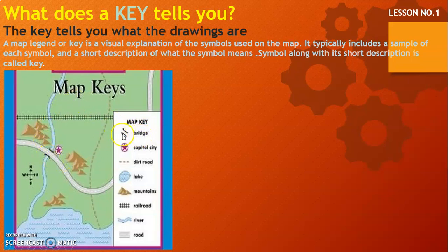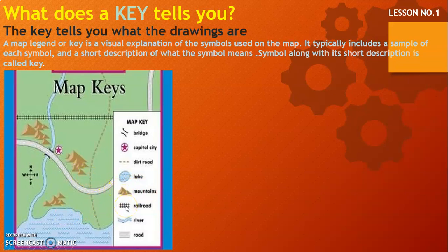In this map, this symbol represents a bridge — there is the bridge. This symbol represents a capital city. The dirt road is represented by the dotted symbol. The lake is represented by this sign. Mountains are represented by this symbol. The railroad is represented by this symbol — these are the railroads. And the river is represented by this sign — this is the river. The road is represented by this grey horizontal bar.